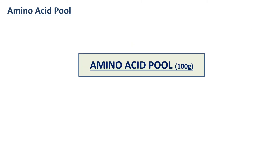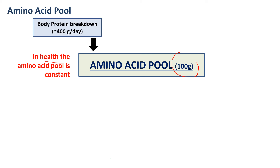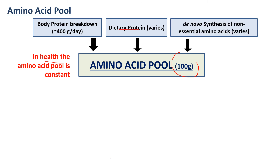Our amino acid pool is roughly 100 grams in total, and that amount should be constant for any healthy individual, as we are always in nitrogen balance. There are three important sources of amino acids: number one, from the breakdown of body proteins; number two, from our diet; and number three, from the de novo synthesis of non-essential amino acids. These are the inputs.